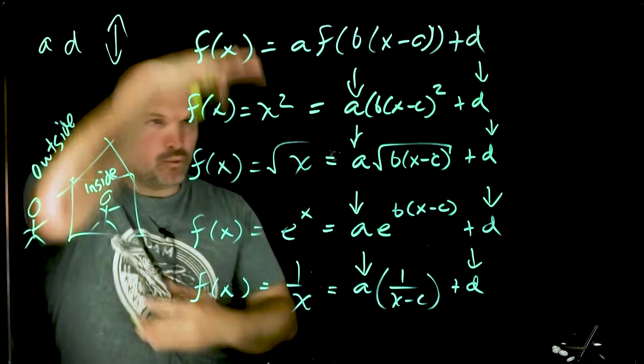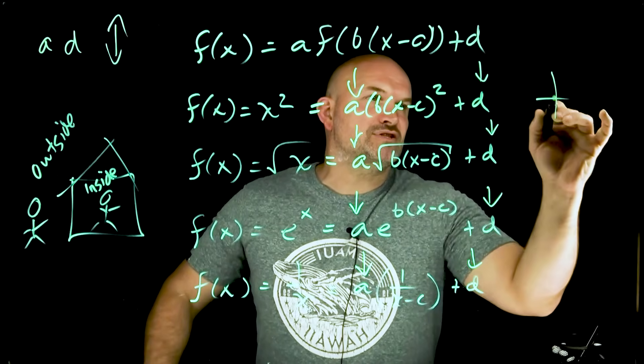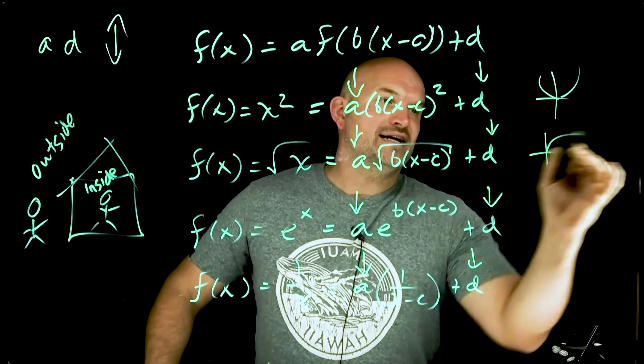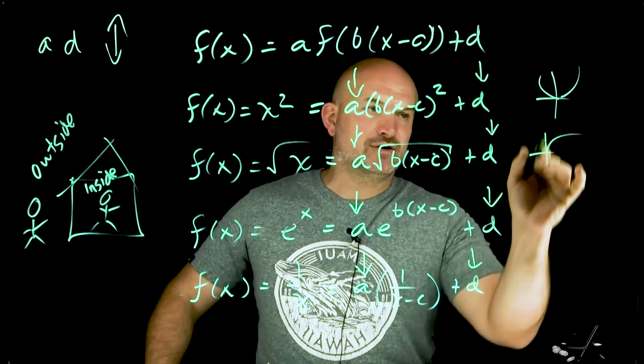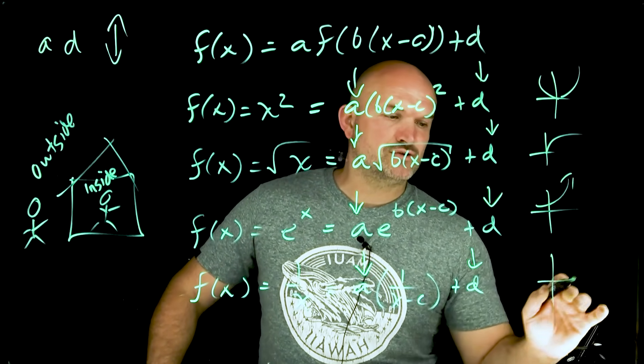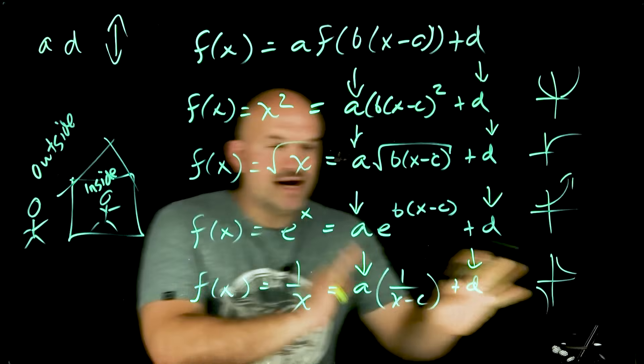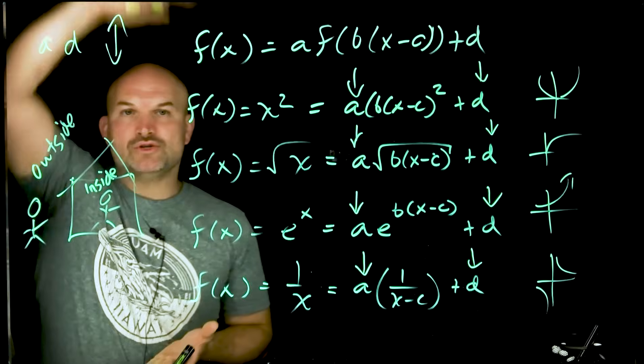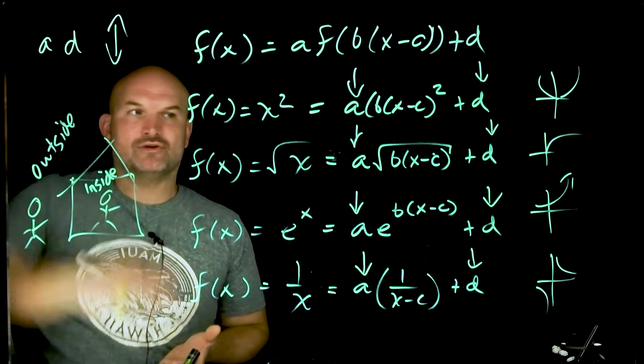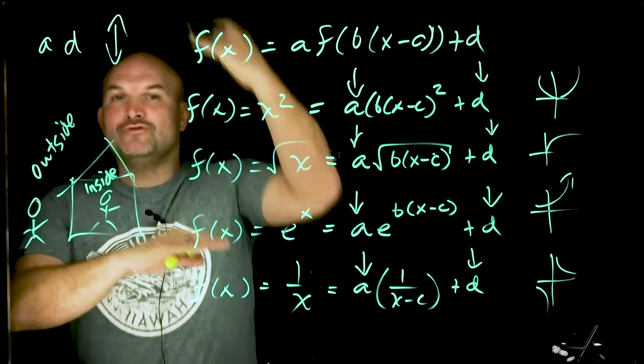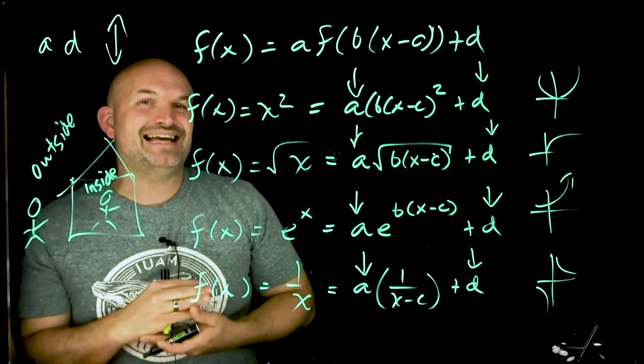Well, A, it doesn't matter what the function is. I don't care what this graph looks like. That's the square root graph. That's the, I'm sorry, that's the quadratic graph, the square root. This is the exponential, and that is going to be the reciprocal graph. I don't care what the graph looks like. A is always going to vertically stretch or compress the graph. If A is negative, it's going to vertically reflect the graph across the x-axis.